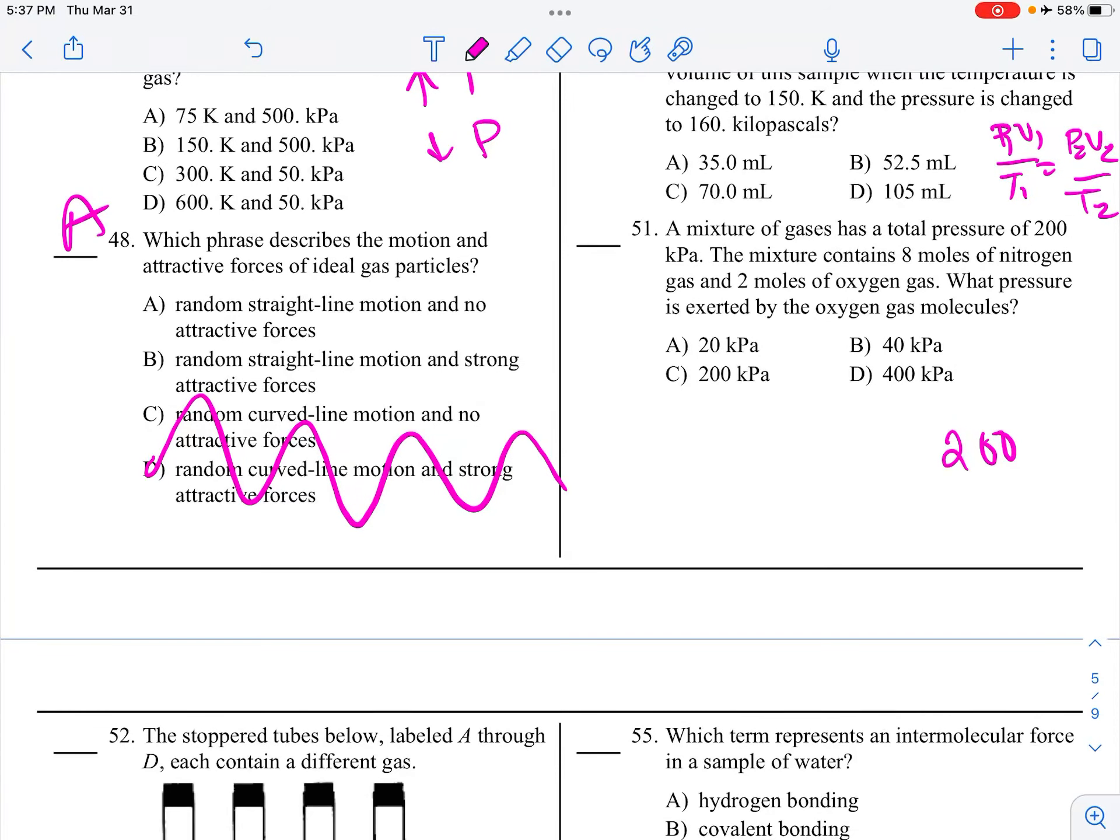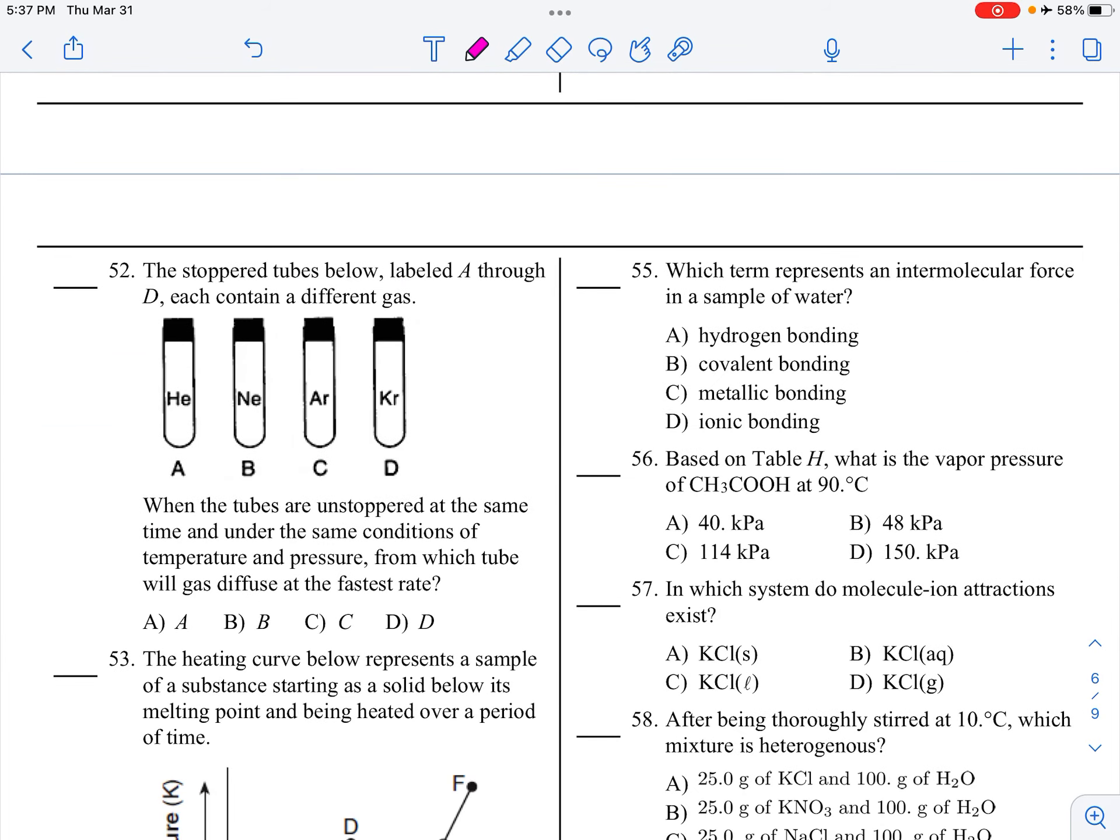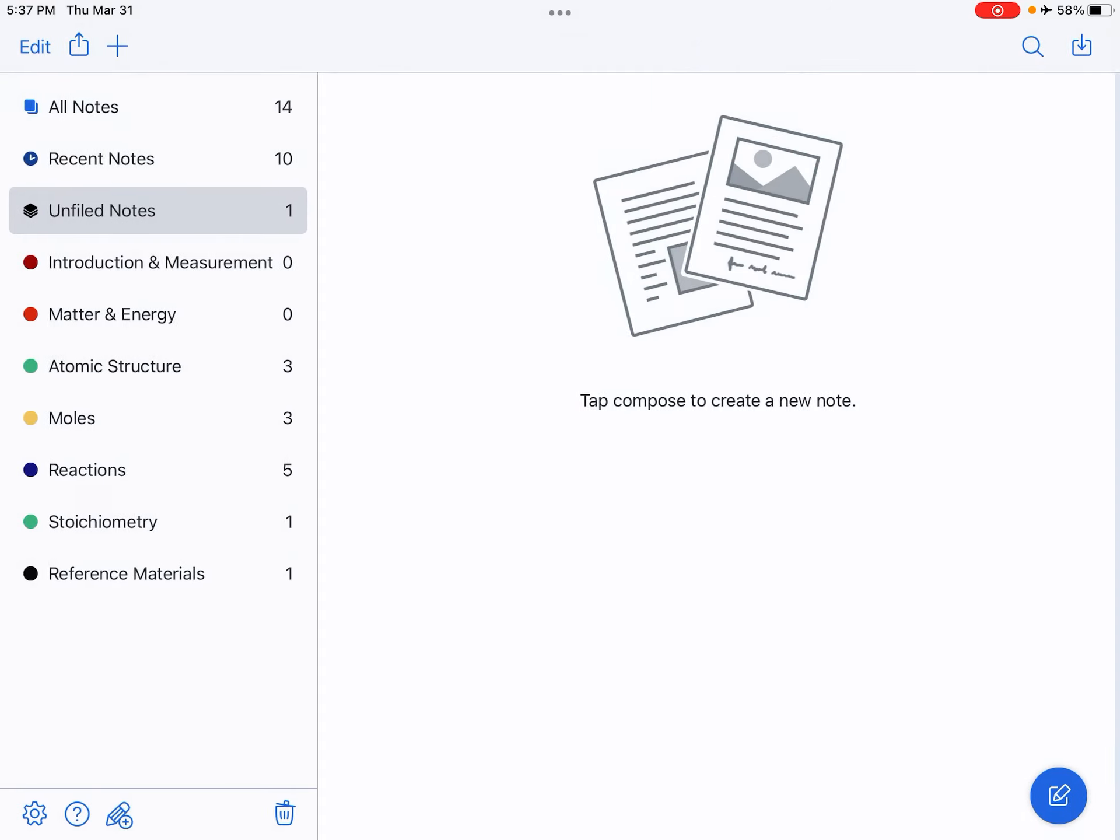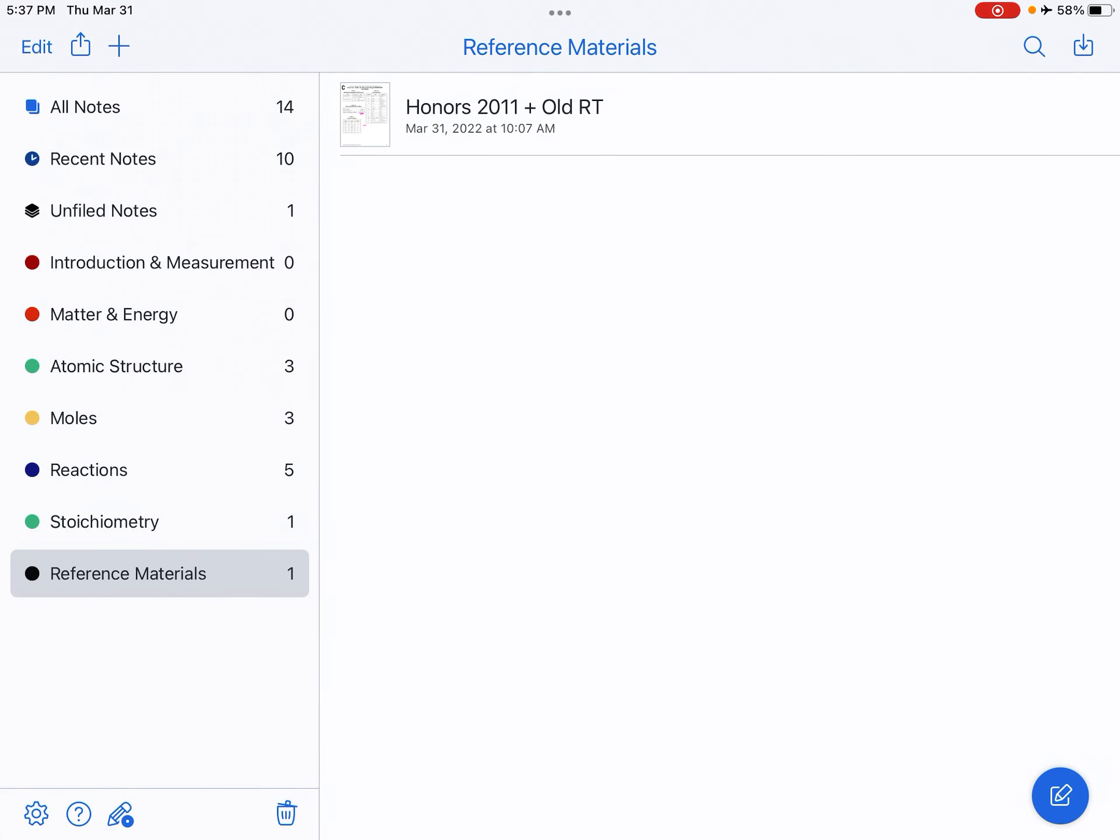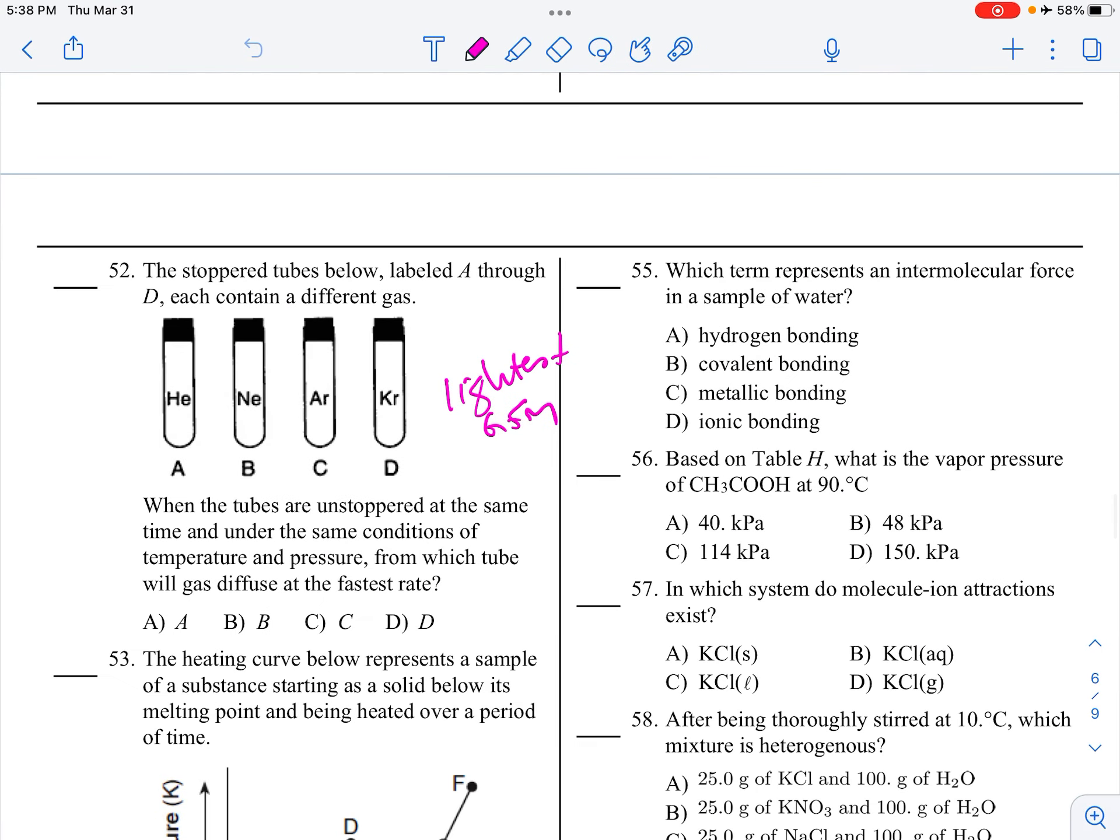We're back and we're going to pick up with problem 52. The stoppered tubes below, labeled A through D, each contain a different gas. When the tubes are unstoppered at the same time under the same conditions of temperature and pressure, from which tube will gas diffuse at the fastest rate? That would be the lightest of the GFMs. Let me check the periodic table. Helium has a mass of 4, neon is 20, argon is 40, and krypton is 84. So helium is by far the lightest. Choice A for 52.